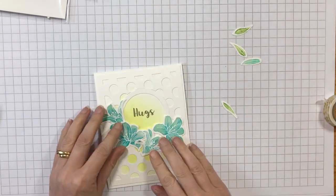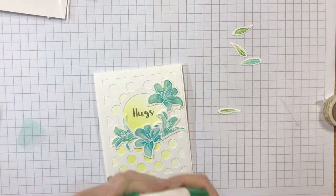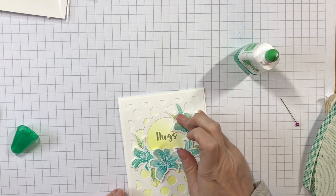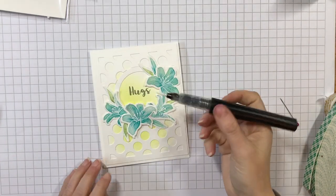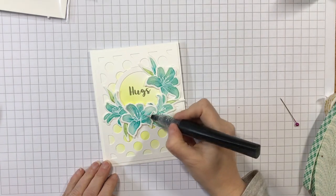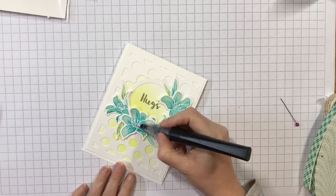You can arrange the die cut elements around the frame however you wish to give you the final look you want. Once I was happy with my arrangement, I glued everything in place using liquid adhesive to give me a bit of time to make any adjustments I needed before they were set in place.